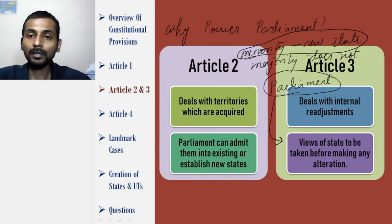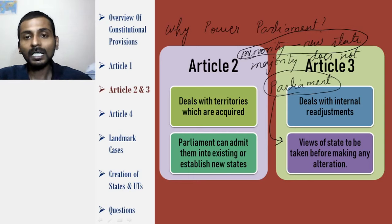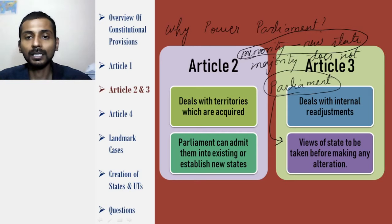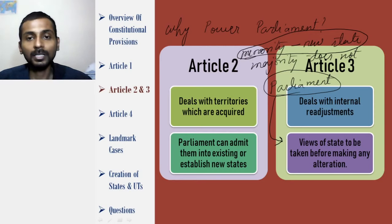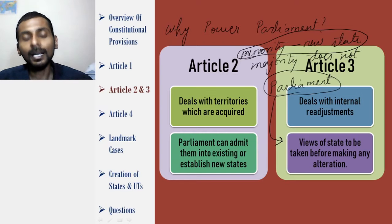When the President asks states for their opinion on this matter, the President gives a certain time frame. Within that time frame, the state can say yes, it can say no, or it can do nothing — it doesn't matter to the parliament. Parliament, if it wants, can go ahead with the proposal already put in the house. Further, say the opinion of the state has been taken and then parliament amends that bill. The state has given opinion on a certain bill, but parliament after taking that opinion feels an amendment is needed — parliament doesn't need to ask the state's opinion again for that amendment.